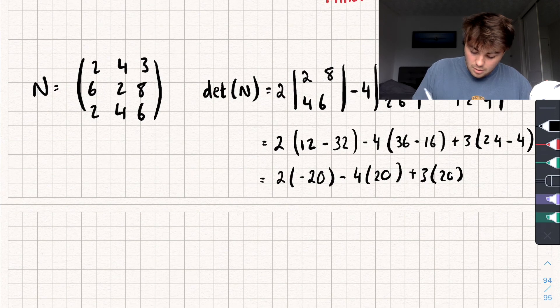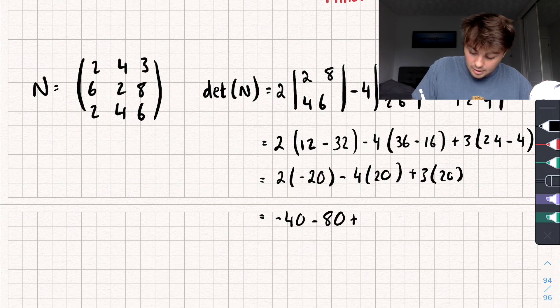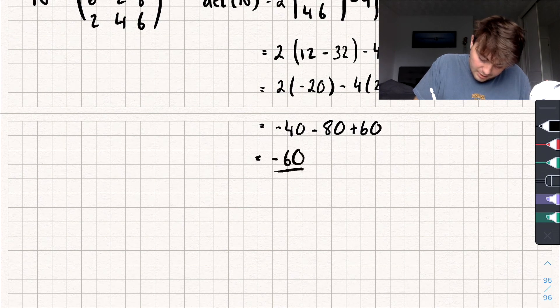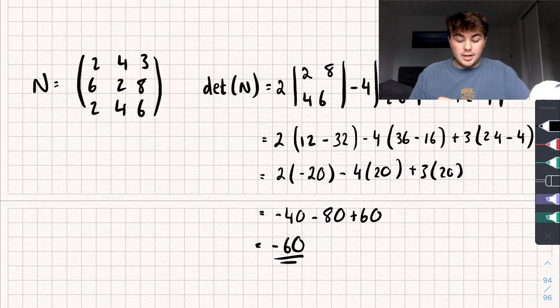And so, we get 2 multiplied by negative 20, minus 4 multiplied by positive 20, plus 3 multiplied by positive 20. So, when we work this out, we're going to get negative 40, subtract 80, plus 60. And so, when we work all of that out, we get negative 60 as our determinant of matrix N.